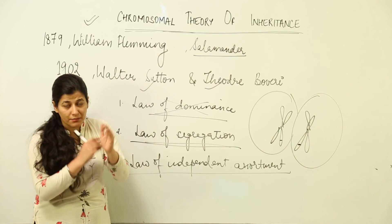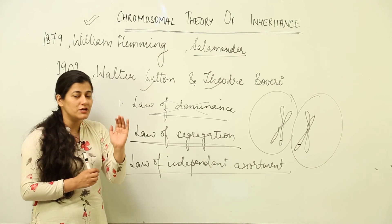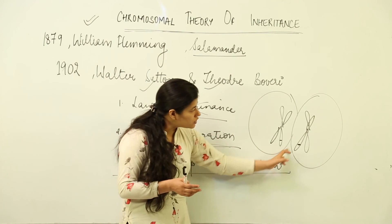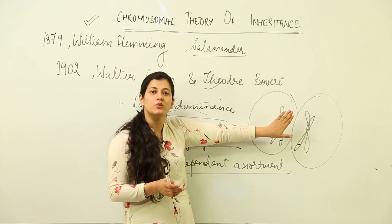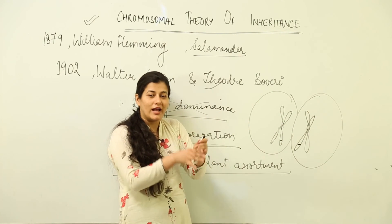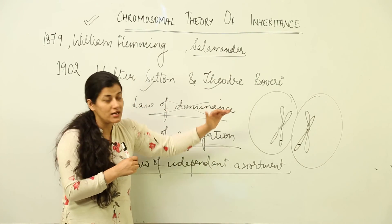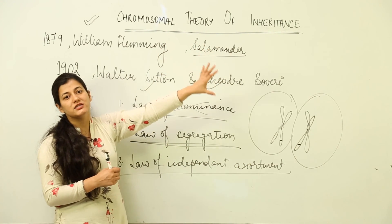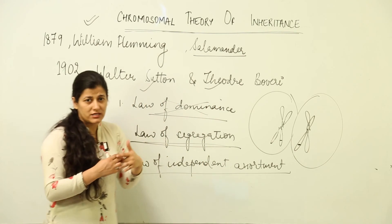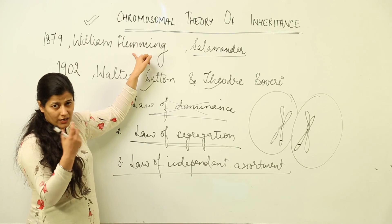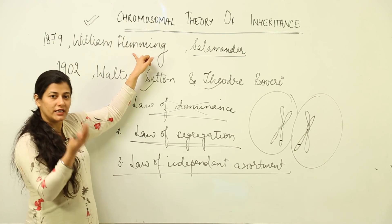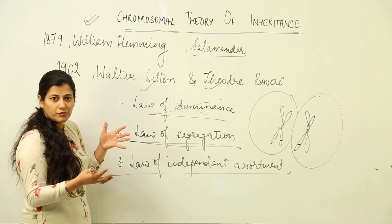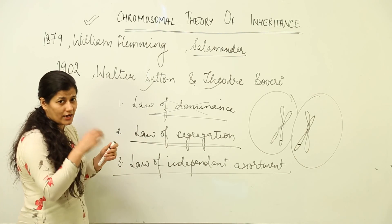Since genes are far more in number compared to chromosomes, and genes follow what chromosomes do, the chromosome must be the site where genes are located. A chromosome houses many genes, which give rise to many character expressions. This is what the chromosomal theory of inheritance is all about — the chromosome is the site where that particular arrangement of DNA is present.